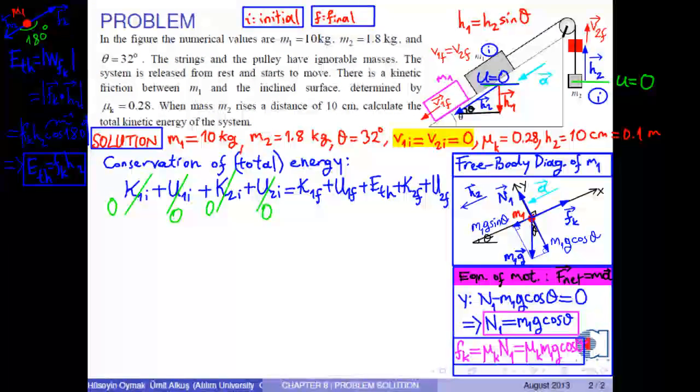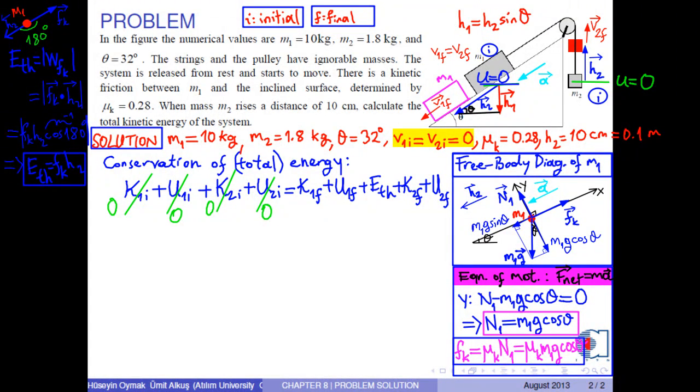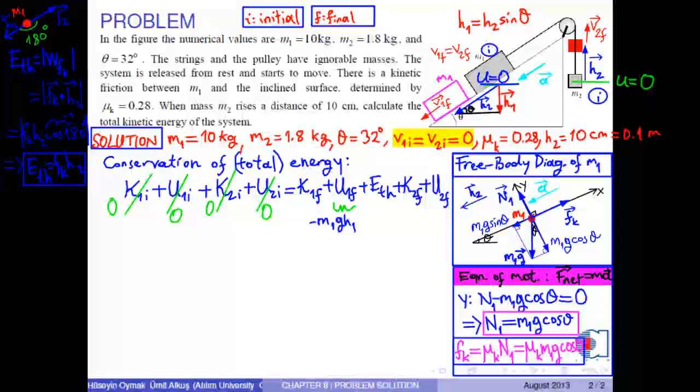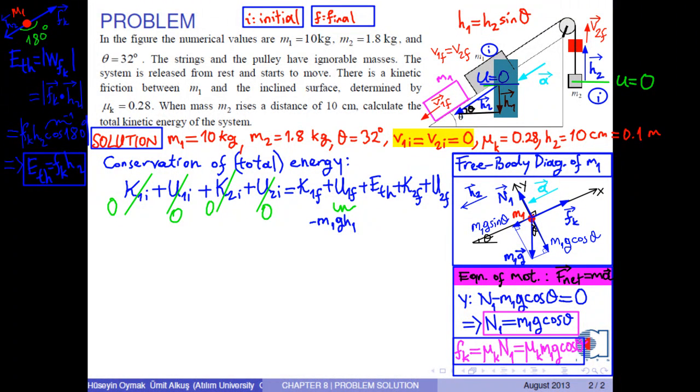So, the final potential energy of mass m1 is negative m1 times g times h1, since it is h1 below the zero potential energy level. Next, independently of mass m1, the final potential energy of mass m2 is m2 times g times h2, because it is h2 above the zero gravitational potential energy level. Finally, the thermal energy due to friction between m1 and the inclined surface is Fk times h2.